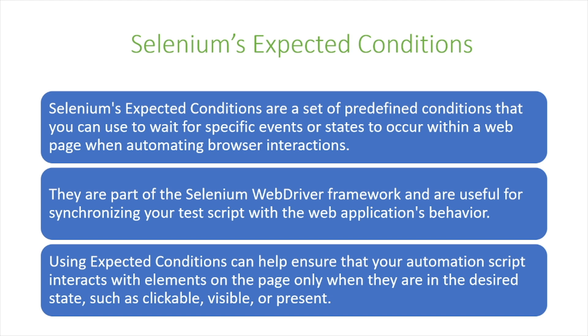Using expected conditions can help ensure that your automation script interacts with elements on the page only when they are in the desired state, such as clickable, visible, or present.